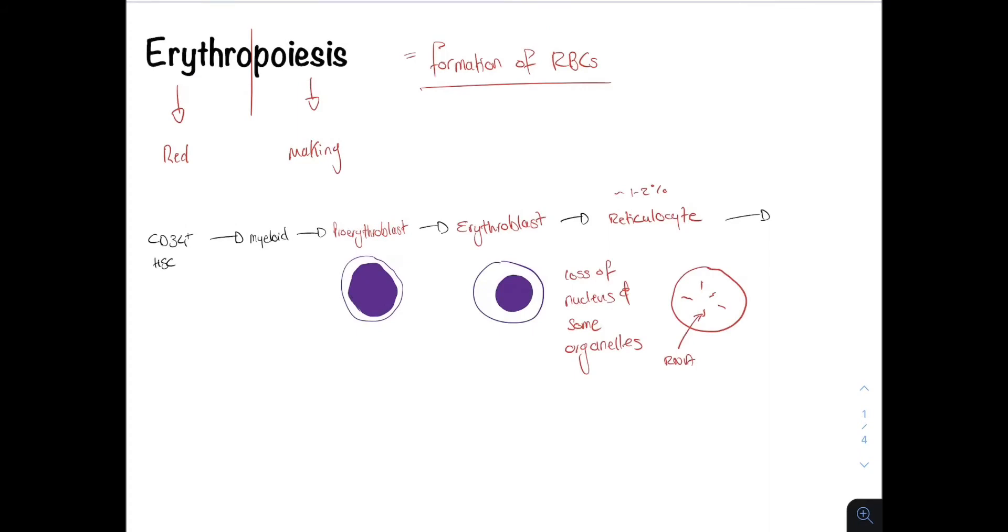The normal reticulocyte count in the blood is 1-2%. The reticulocyte then becomes the erythrocyte, which is the red blood cell, and red blood cells have a lifespan of 120 days. What we can see here is that slowly the red blood cell loses its nucleus. This is very important. Red blood cells lack nuclei and are packed full of hemoglobin. We shall discuss the function of hemoglobin later.